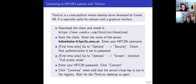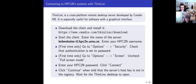On the ThinLinc client, when you have started it, enter the name of the server and your HPC2N username. If it's the first time, go to Options > Security and check that authentication is set to password. Also go to Options > Screen and uncheck full screen mode, because otherwise, especially on a laptop, it will use more space than your screen. Then put in your HPC2N password — if you don't enter it immediately in the login screen it will fail. Click Connect and then Continue when it tells you the server's host key is not in the registry. After a few minutes the ThinLinc desktop opens.